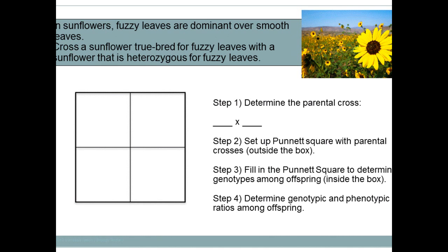Now that we've done that one together, there are three more example slides for you to do in your notebook. Also, at the beginning of class I should have given you your homework for tonight, which deals with probability and genetics — making Punnett squares and working with dominant and recessive genes. Go ahead and get started on that once you're done with the examples. Write your questions down in your notebook, and if you need any help, let me know.